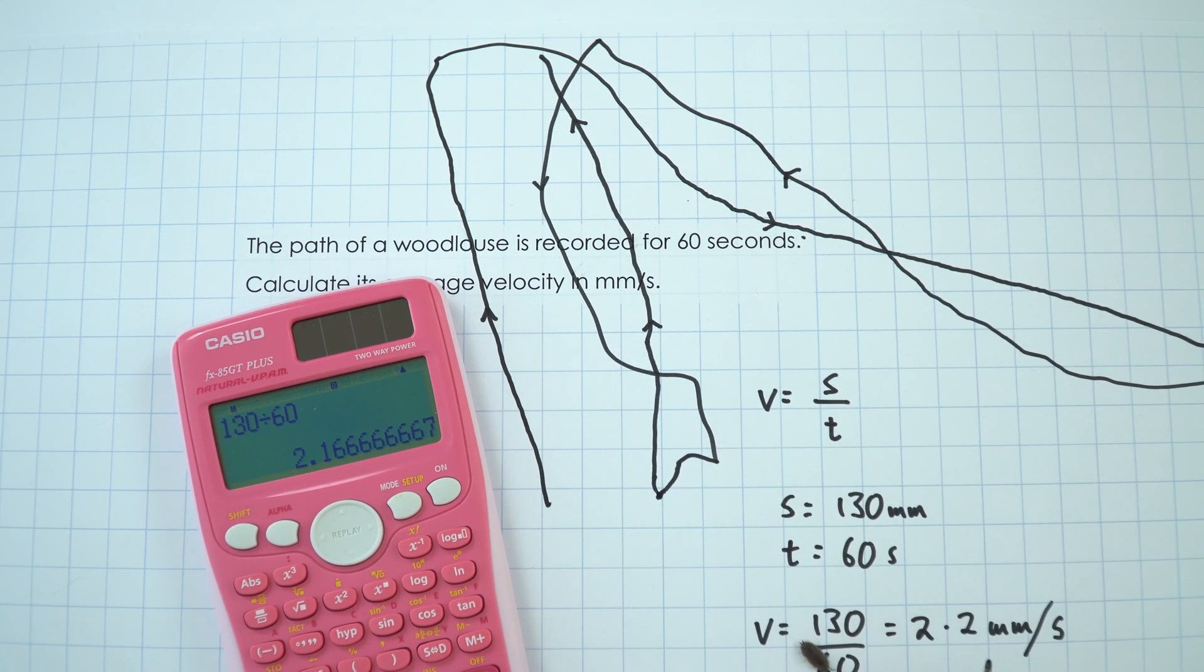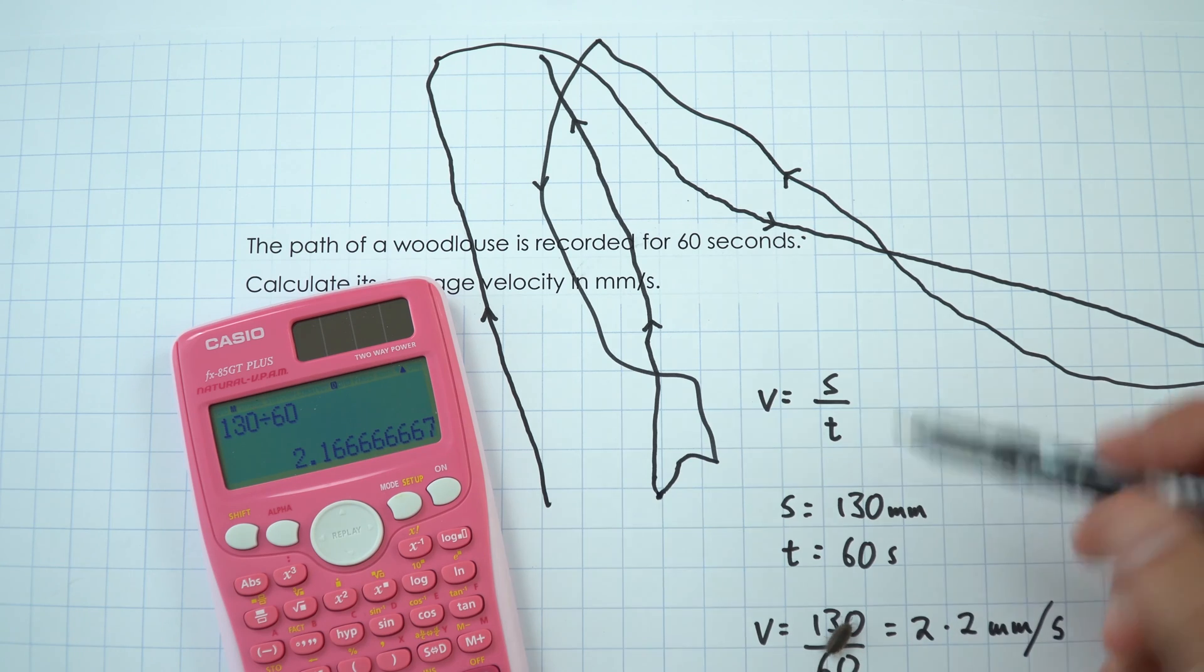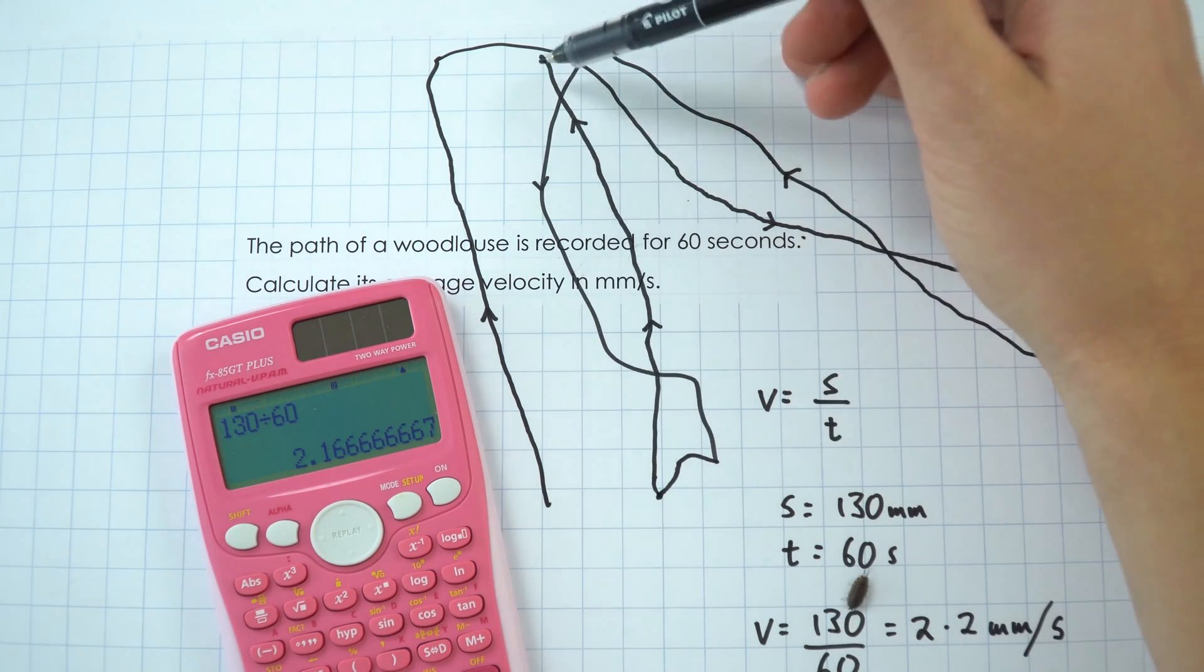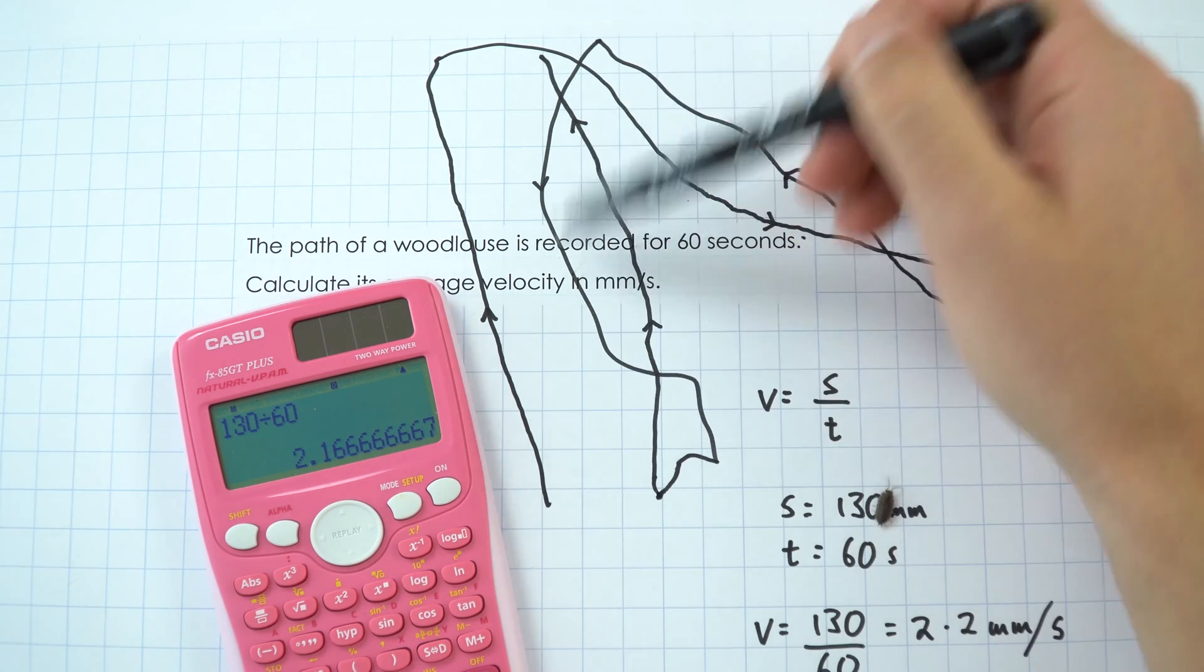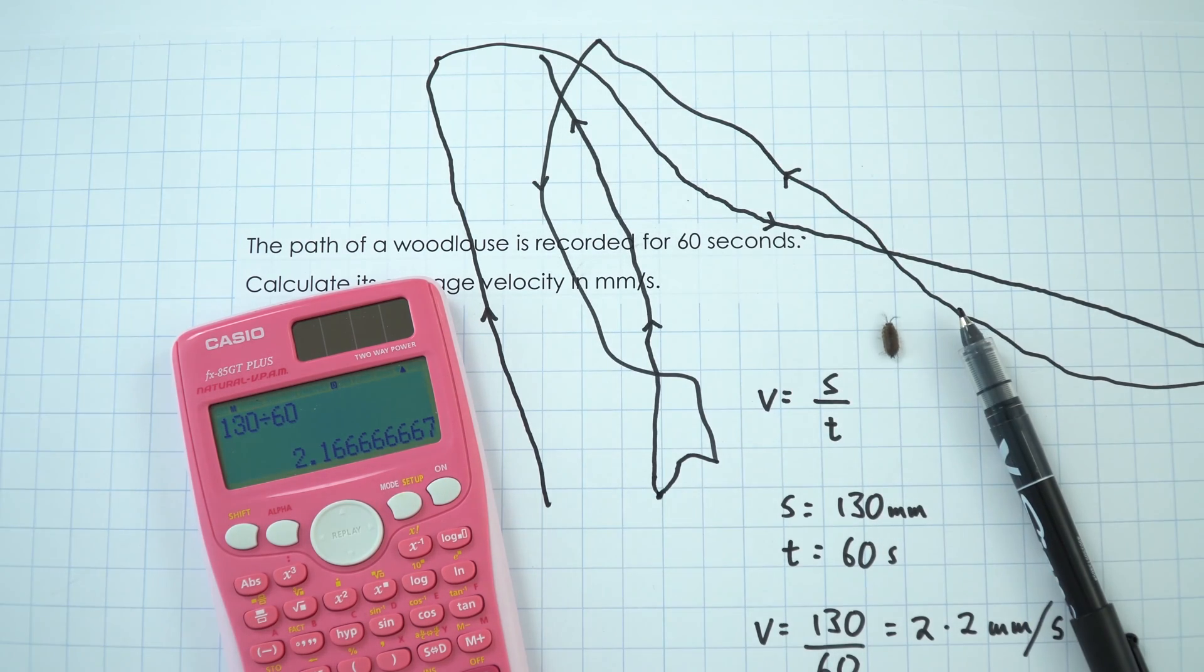So that's all there is to it. To work out the average velocity of a woodlouse, all we need to do is look at its start and its end location, measure that displacement, and then use that to find its average velocity.